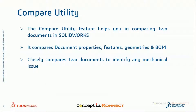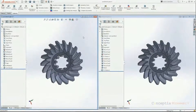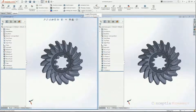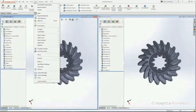The next tool is the Compare utility. Generally, parts vary slightly in design, resulting in slight changes in geometry. Compare Documents can be used to compare document properties, features, geometries, or even bill of materials. This tool closely compares two documents to help identify any mechanical issue that may occur due to differences. It can be extensively used to compare a modified design with the initial design — for example, to identify differences between versions. I have two spiral bevel gears: version 2 and version 3.